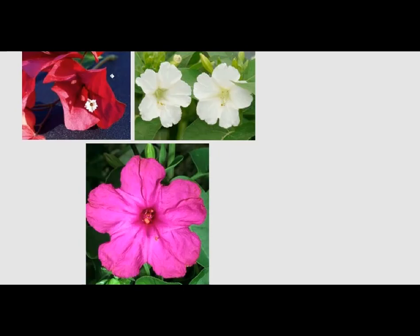The four o'clock flower provides a great example of incomplete dominance. What we're going to do is use a Punnett square to see what happens when we cross a red four o'clock flower with the white four o'clock flower.